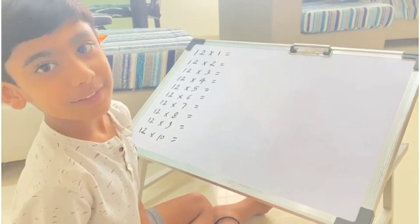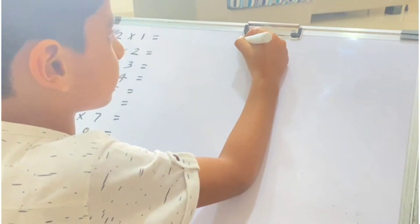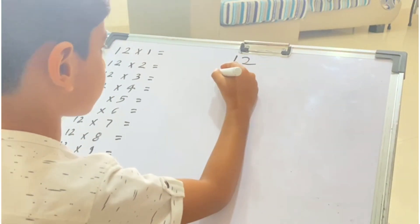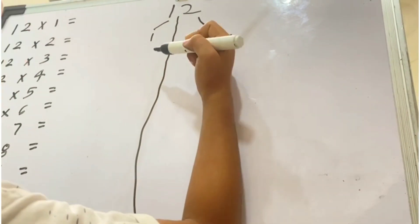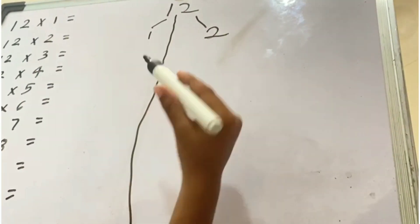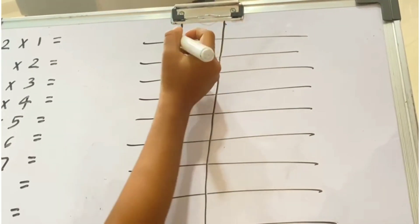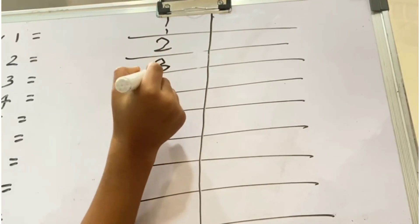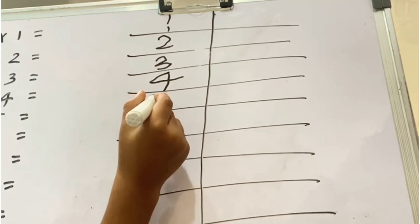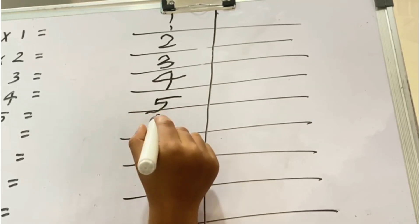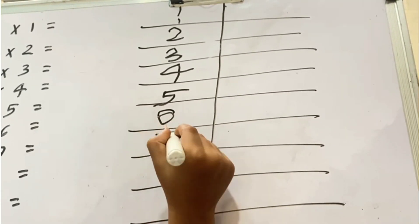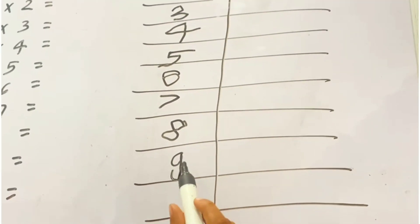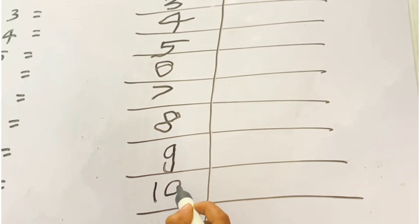This will see 12 tables. Right here 1 table, right here 2 tables. 1 one is 1, 1 two is 2, 1 three is 3, 1 four is 4, 1 five is 5, 1 six is 6, 1 seven is 7, 1 eight is 8, 1 nine is 9, 1 ten is 10.